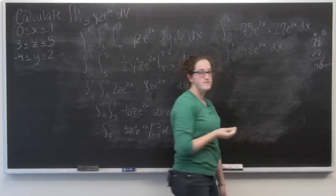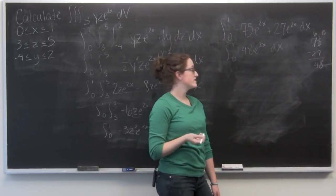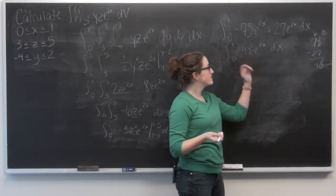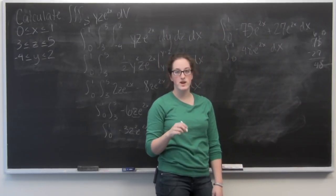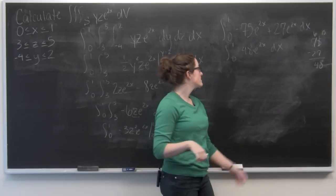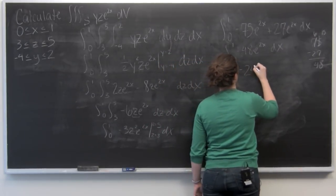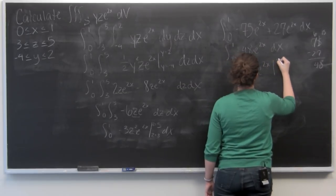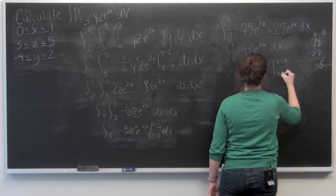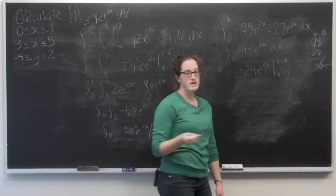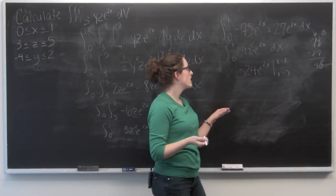OK. Now we need to integrate with respect to x. So we're looking at e to the 2x. Integral of e to the 2x is 1 half e to the 2x. So negative 24 e to the 2x.